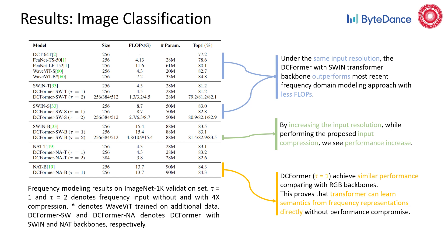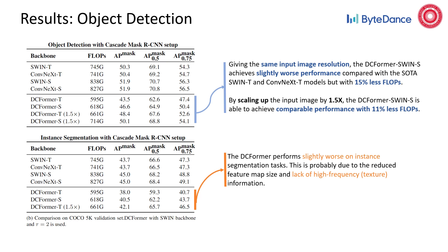We further test the DC former on object detection and instance segmentation tasks. On object detection, given the same input image resolution, the DC former achieves slightly worse performance compared with state-of-the-art RGB models but with 15% fewer FLOPs. By scaling up the input image by 1.5 times, the DC former achieves comparable performance but still with 11% fewer FLOPs. The DC former performs slightly worse on instance segmentation tasks, probably due to the reduced feature map size and lack of high-frequency texture information.